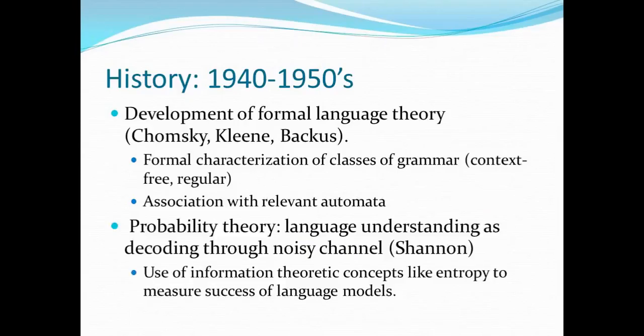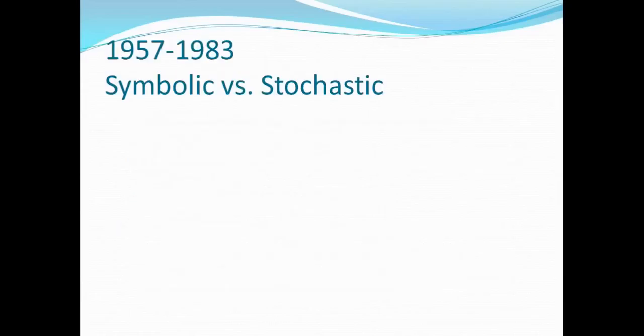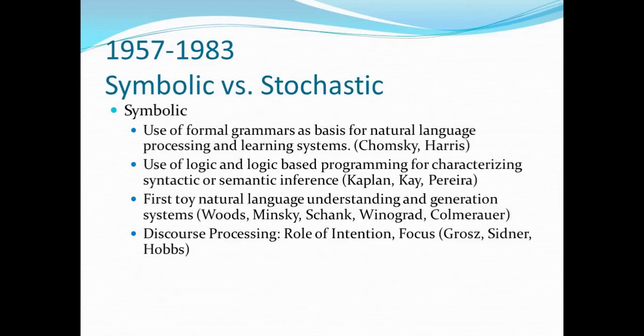Simultaneously, probability theory was starting to be a big deal. The problem of language understanding was examined from the point of view of decoding through a noisy channel. People like Shannon did work on this, using information theoretic concepts and the notion of entropy to measure the success of language models. Because of those parallel tracks, there always seemed to be these two paths, but there was an early divergence that eventually was brought back together in hybrid models. Between 1957 and 1983, there was still this division between the two.